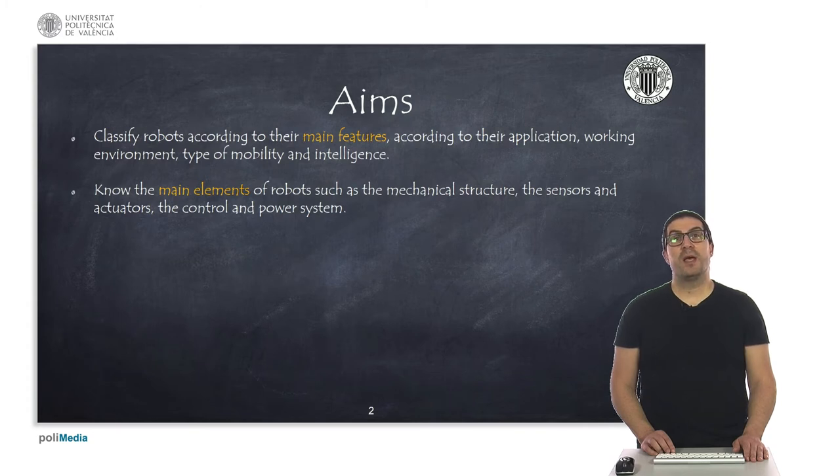In addition to this, I will also present their main elements to make robots different from one to each other, such as their mechanical structure, the type of sensors and actuators, as well as the control and power systems.